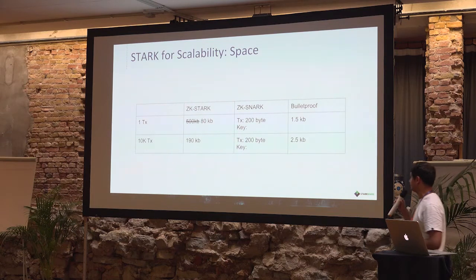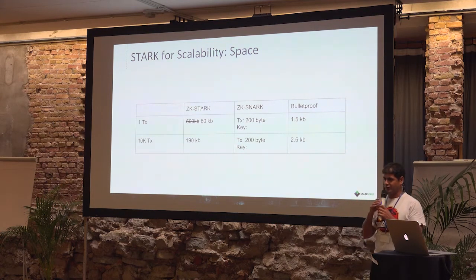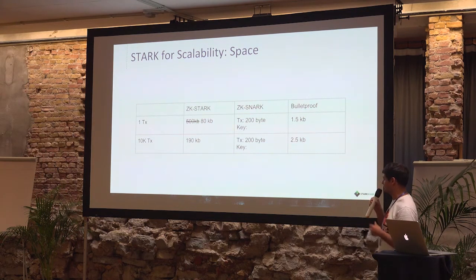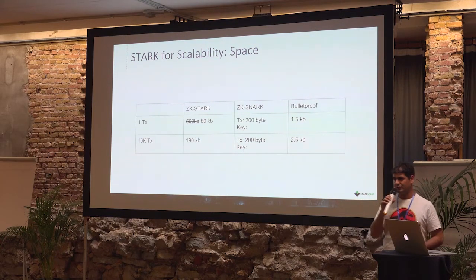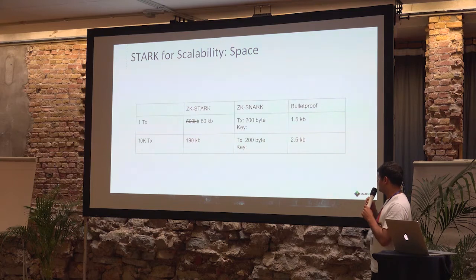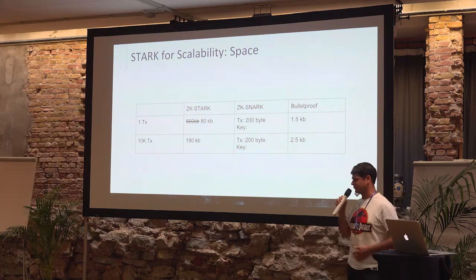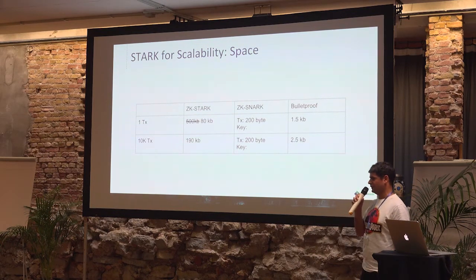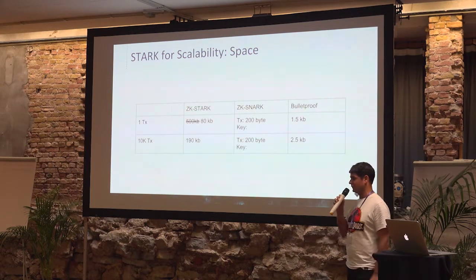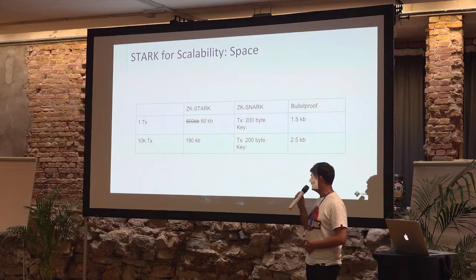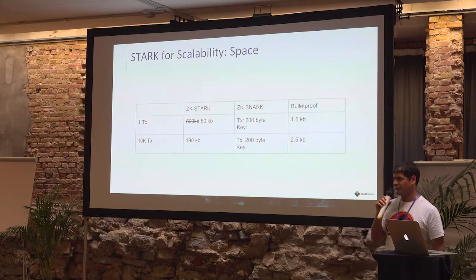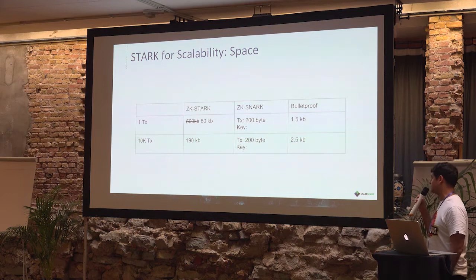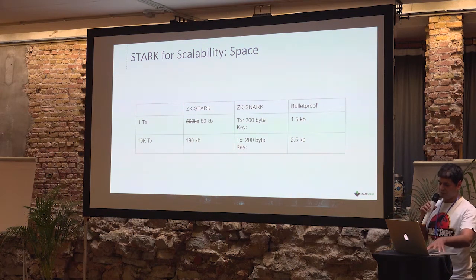One thing I didn't explain is that in SNARK there is a key generation for every different circuit, for every different NP statement that you want to prove, and the size of this key grows linearly with the size of the computation. In Zcash, for example, the key is 900 megabytes, and in the next upgrade they're going to do something like 40 megabytes. But when you want to prove 10,000 shielded transactions, you have to keep in memory a key which is 10,000 times larger — so this is a major drawback, aside from the trusted setup.